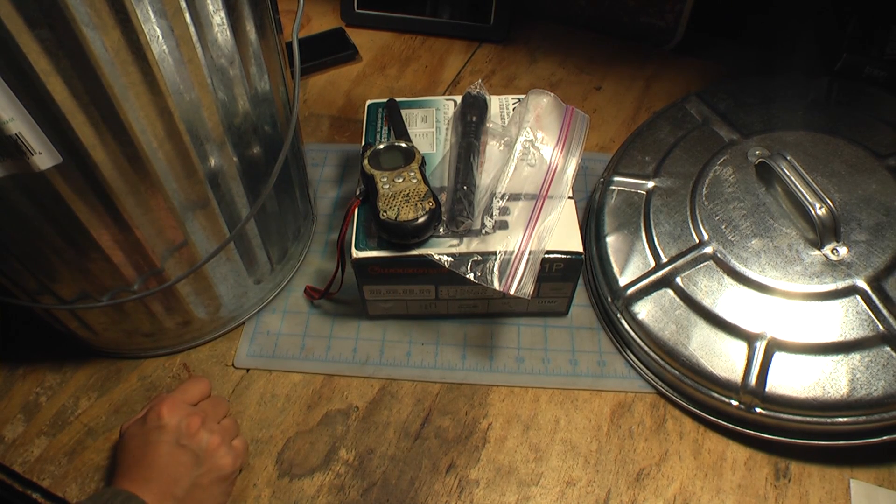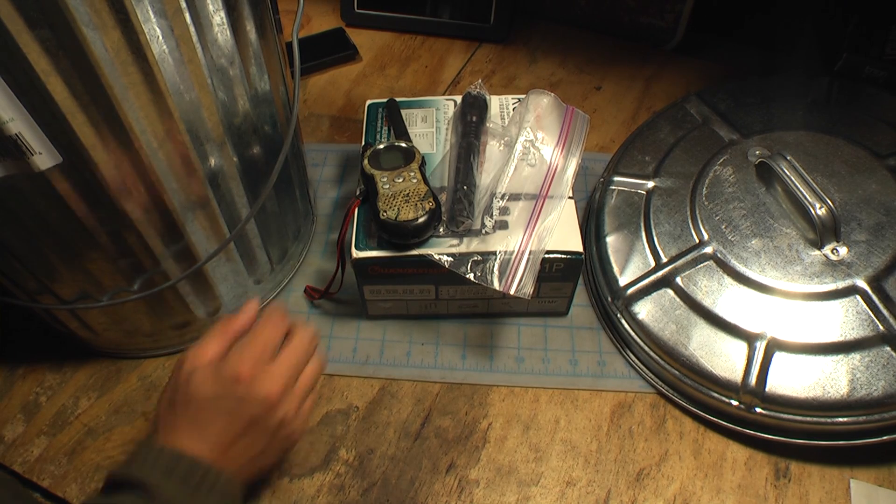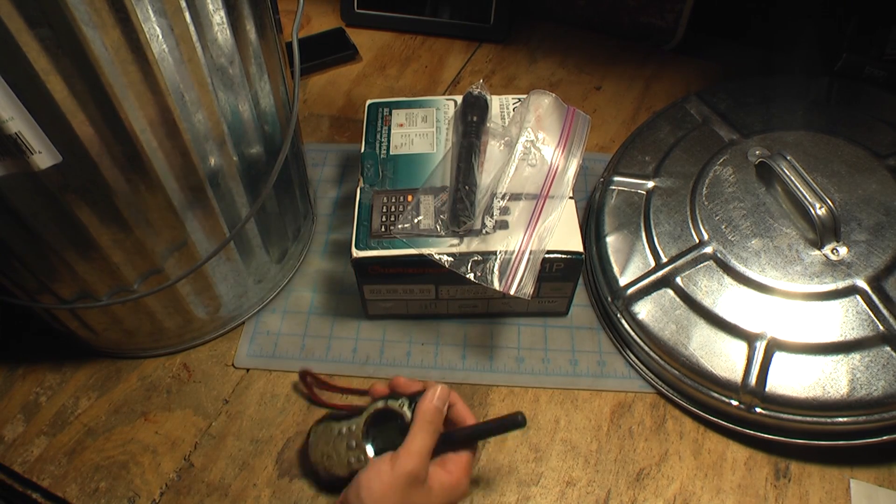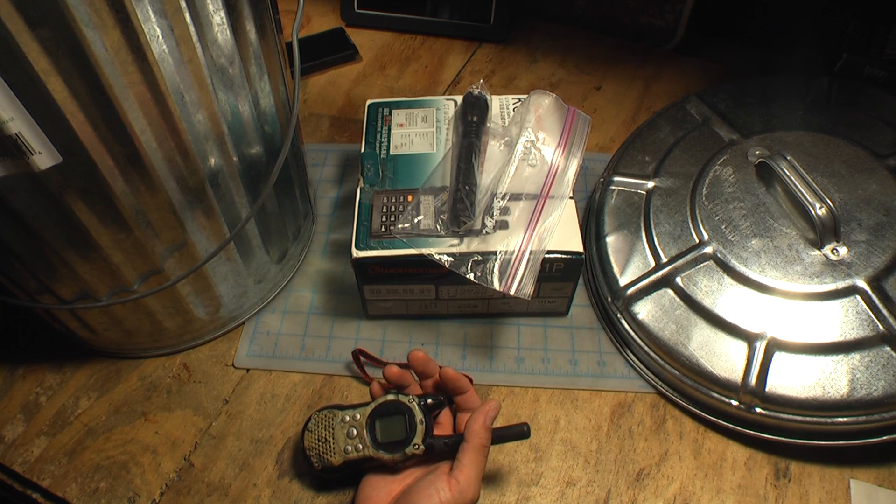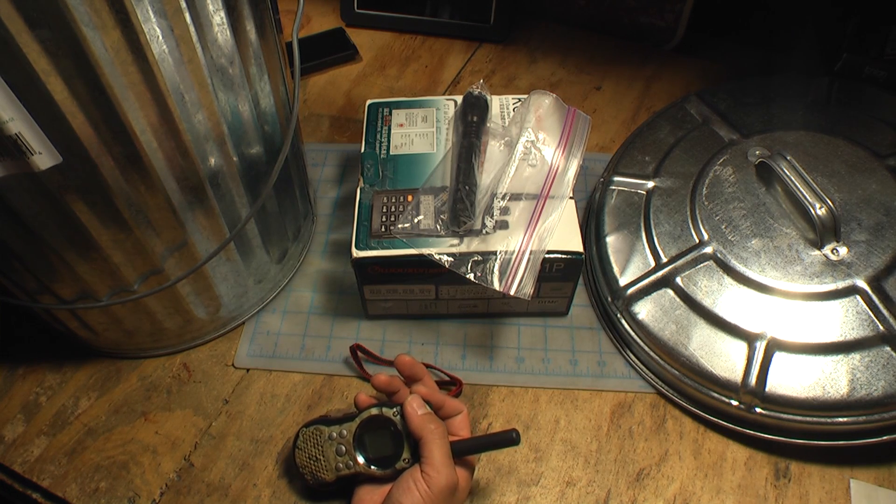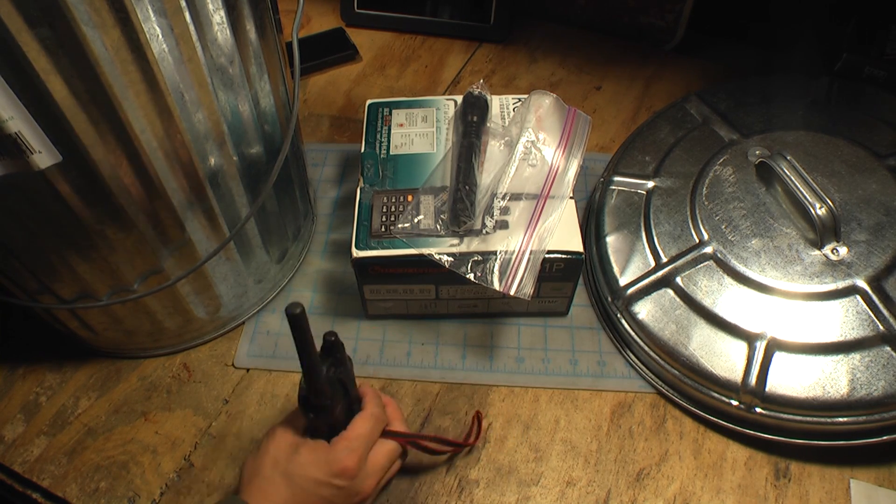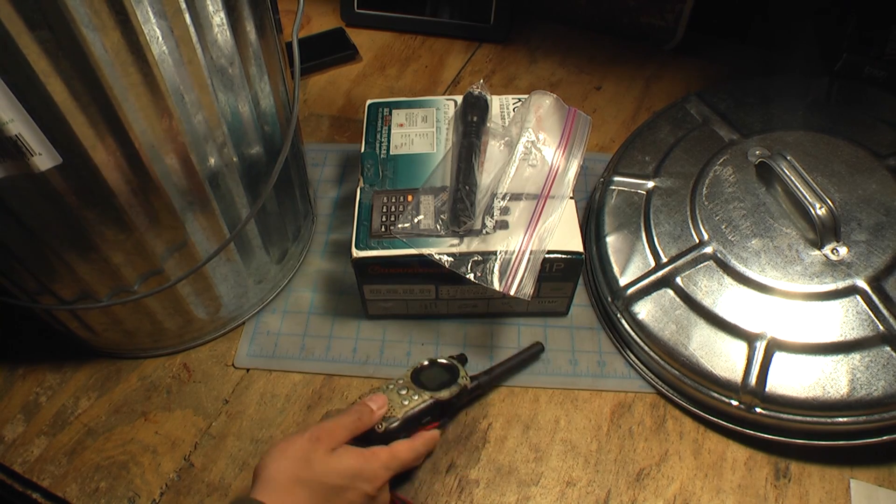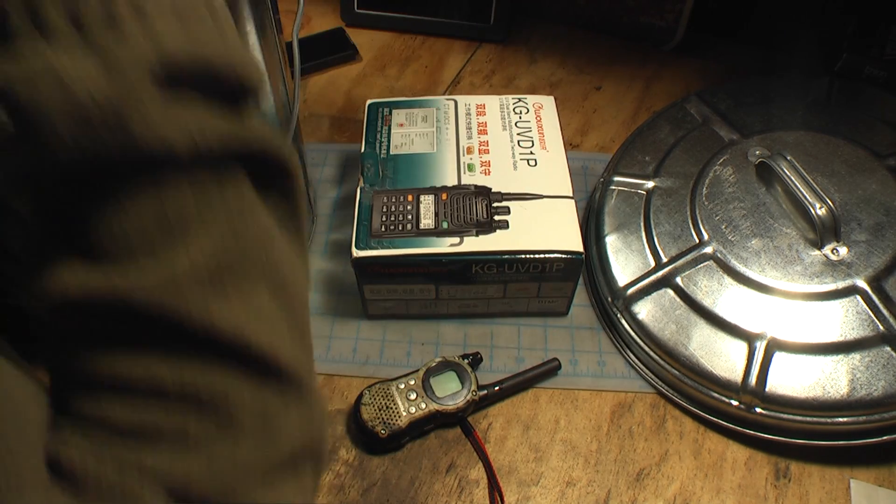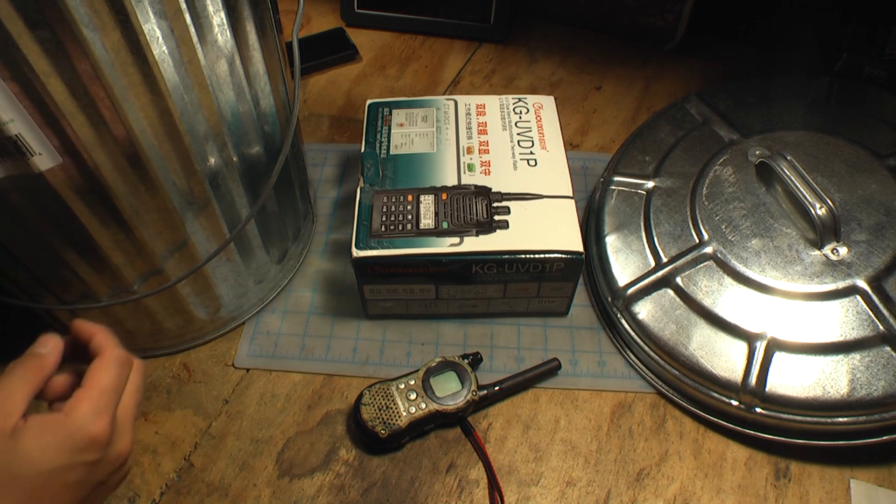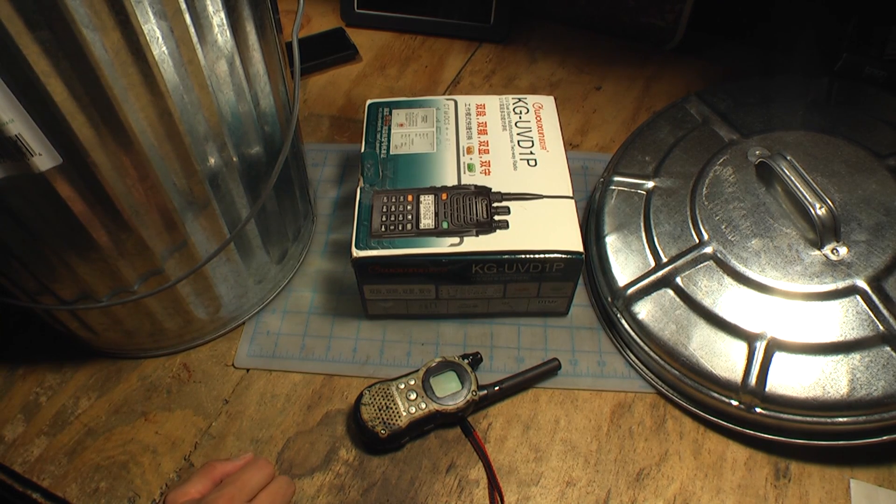An EMP is something that a lot of preppers fear might happen if there is an aerial nuclear attack or if there is a massive solar flare. What an EMP will do is it will fry pretty much any modern electronic device that has microprocessors in them.